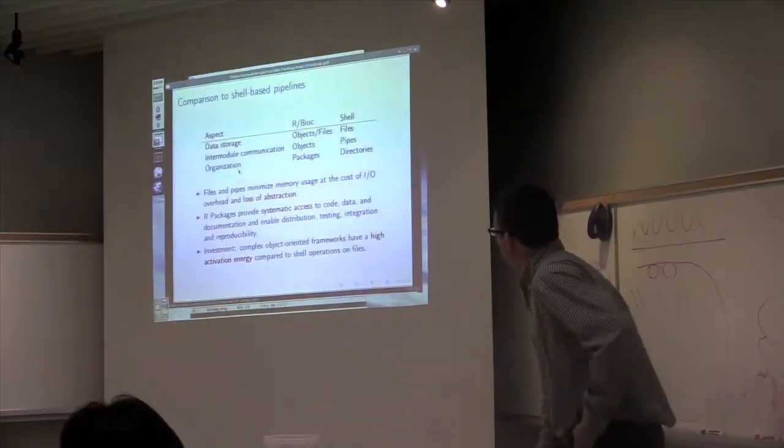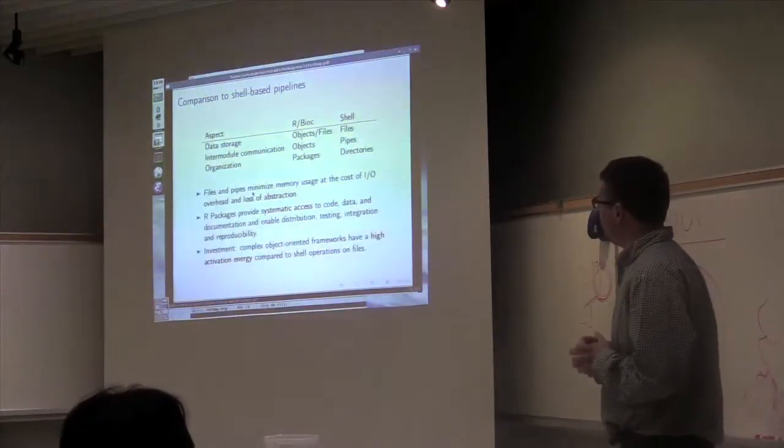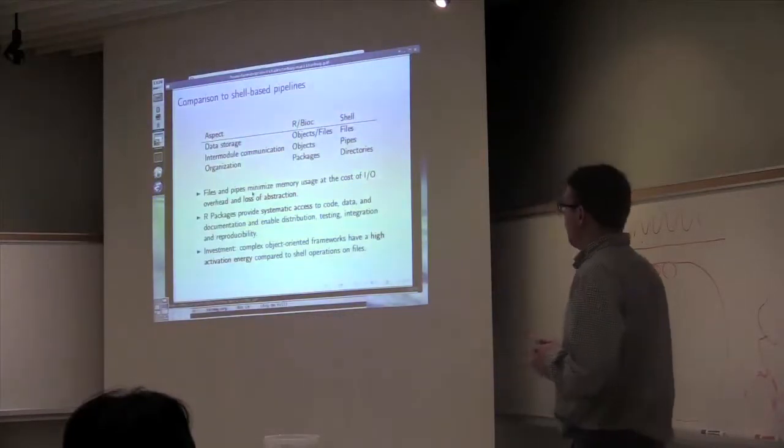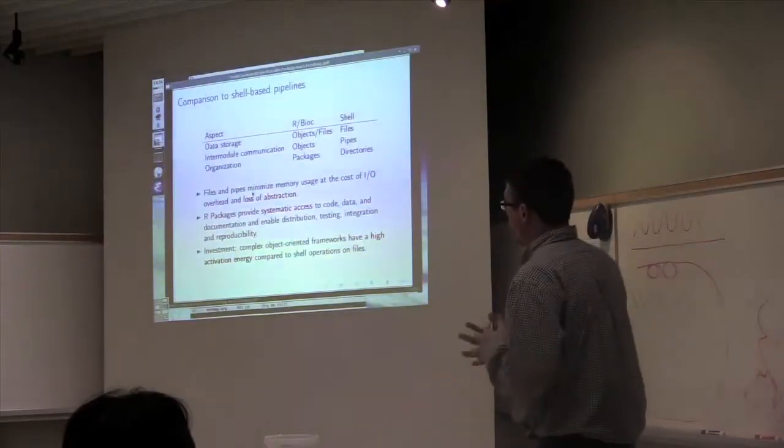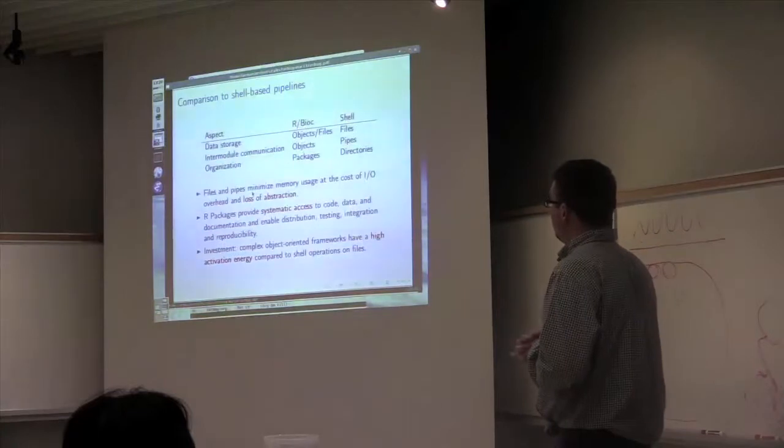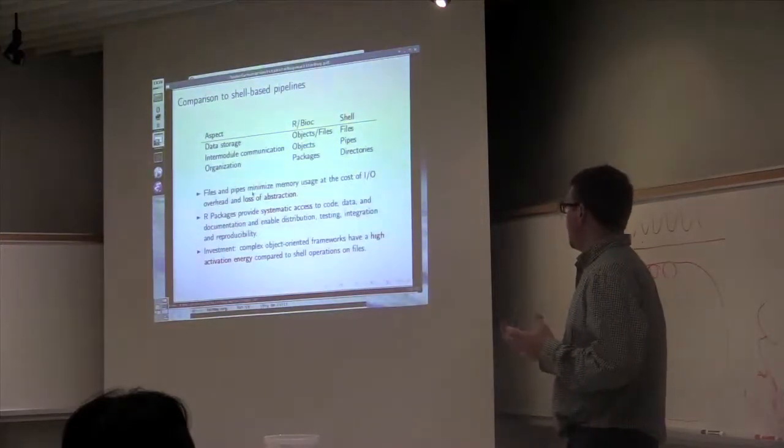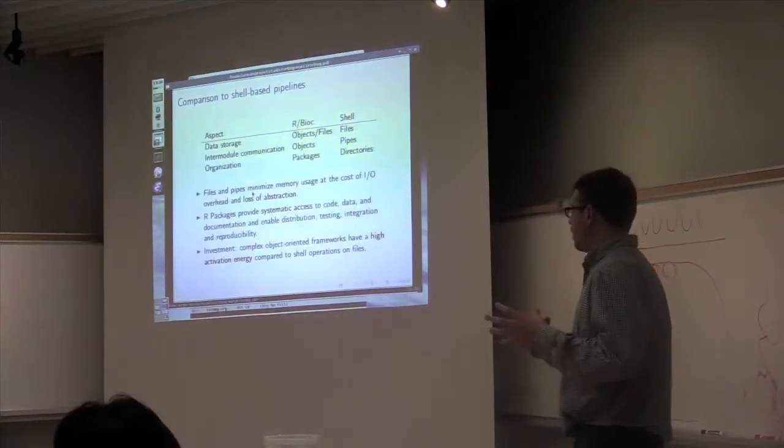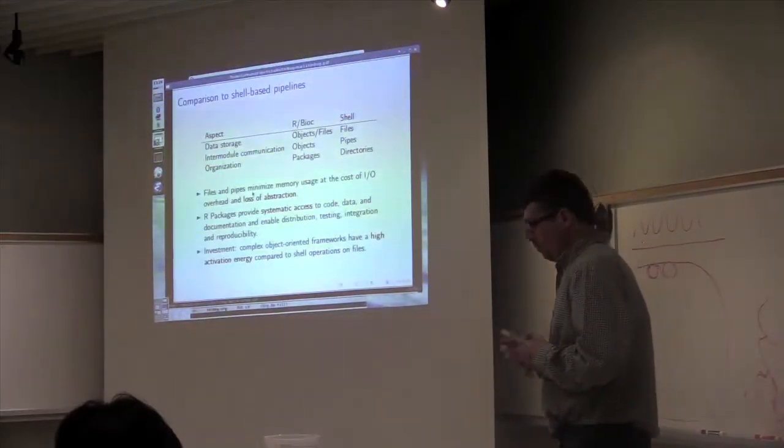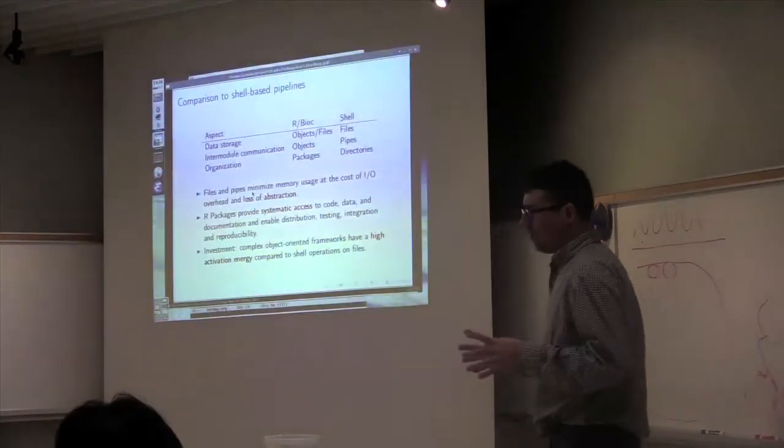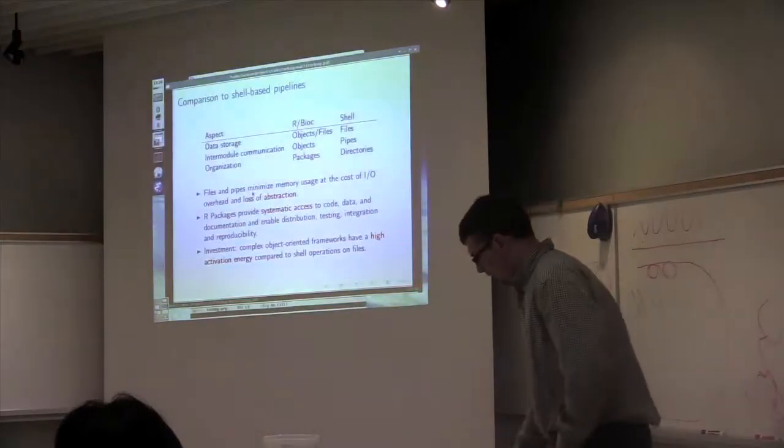So what are the real differences? If you're relying on pipes, they definitely minimize memory usage because you're streaming data through memory, so it's fairly efficient. But there is a lot of I/O overhead using the file system, and a definite loss of abstraction when you're relying on data being encoded in a particular format. R packages are clearly advantageous in that they provide a systematic way of encapsulating all of your data and code and documentation in one distribution. But buying into a Bioconductor-like object-oriented framework is an investment. It's a high activation energy trade-off, but once you make the initial investment, it can be pretty rewarding.